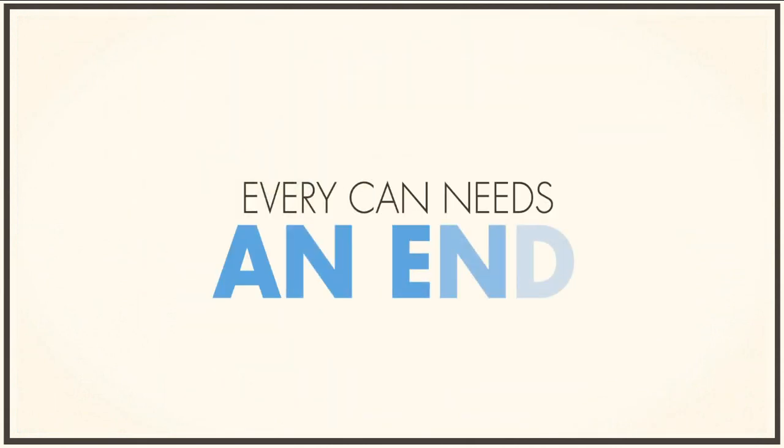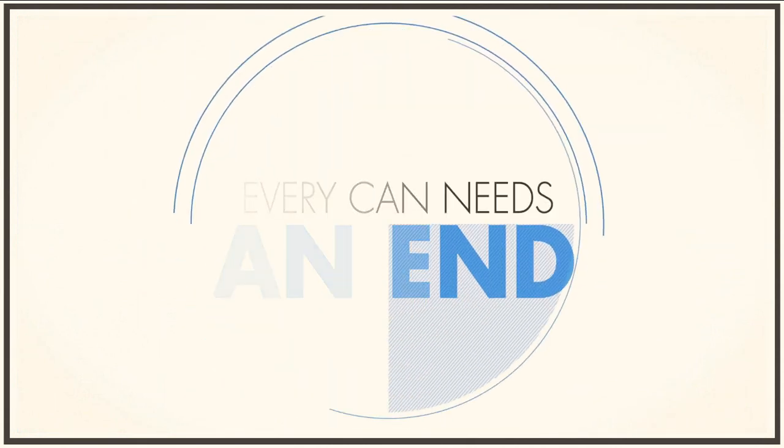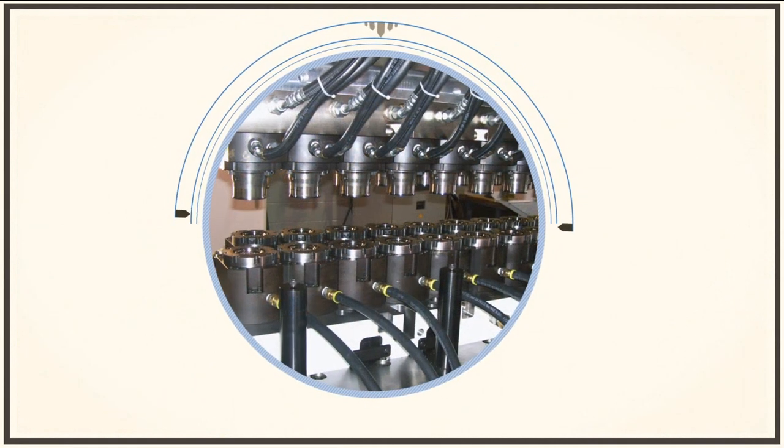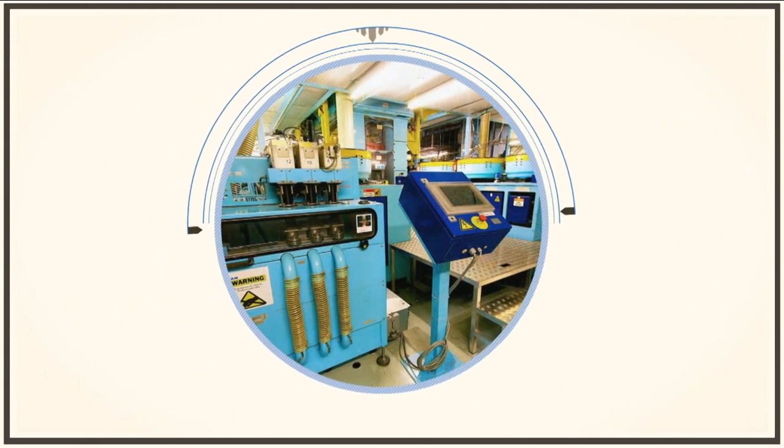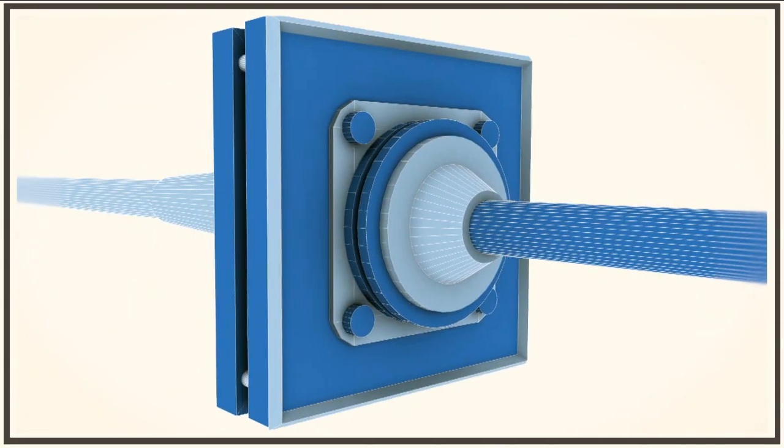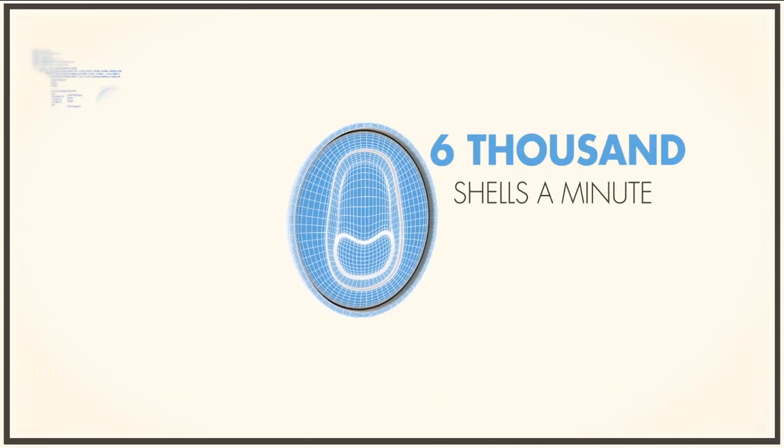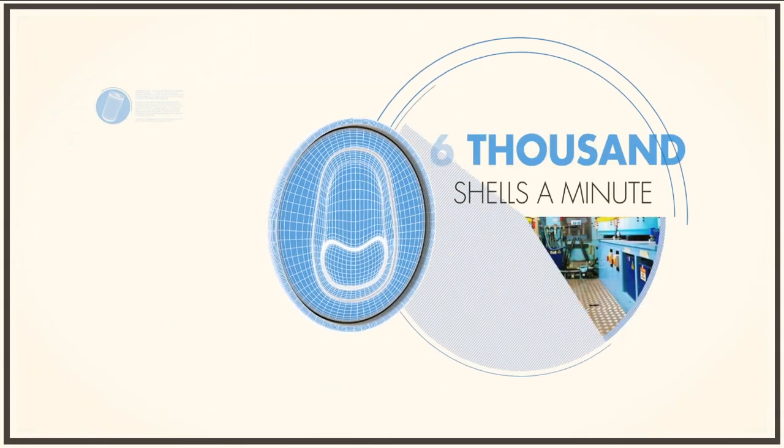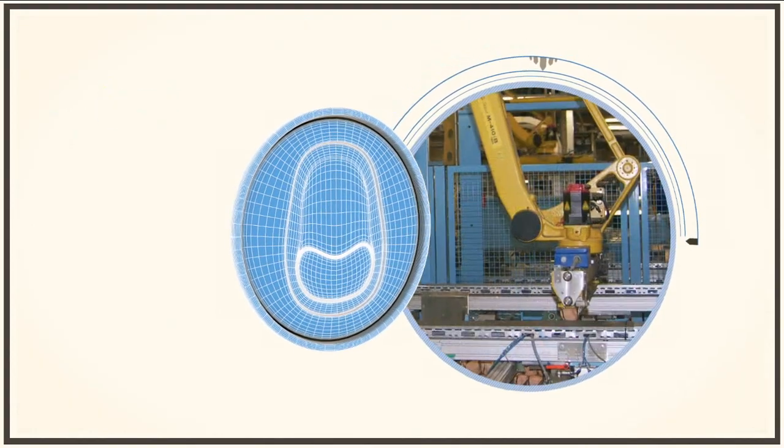Every can needs an end. These are made at separate, dedicated plants using a sophisticated process. A coil of aluminium is fed into a press, which stamps out 6,000 shells a minute. A special sealant is then added to the shell to enable a perfect seal.